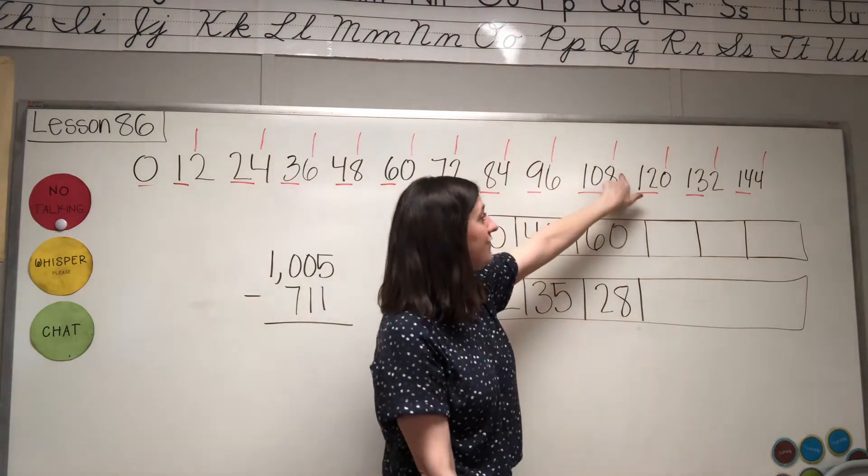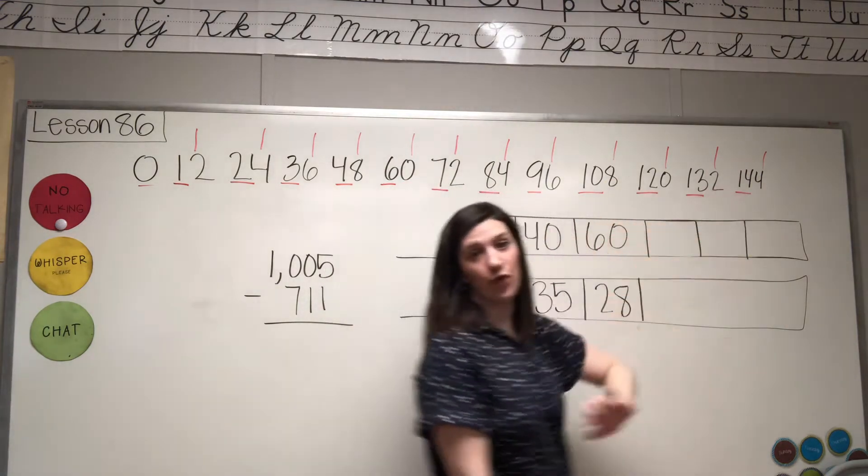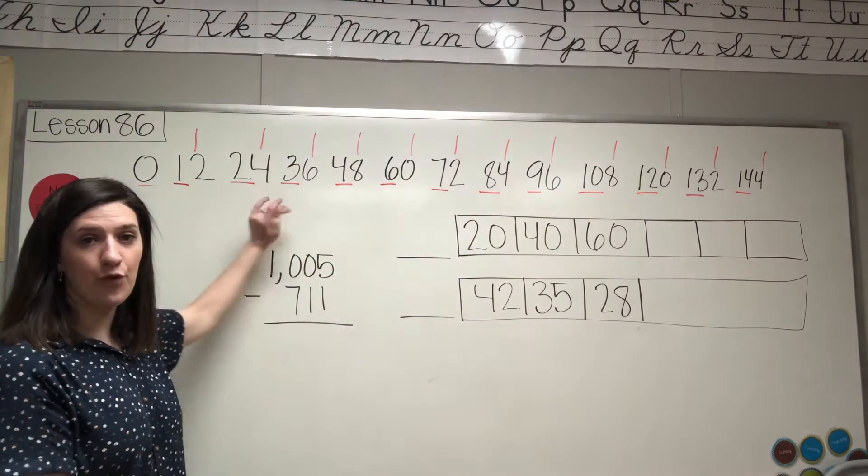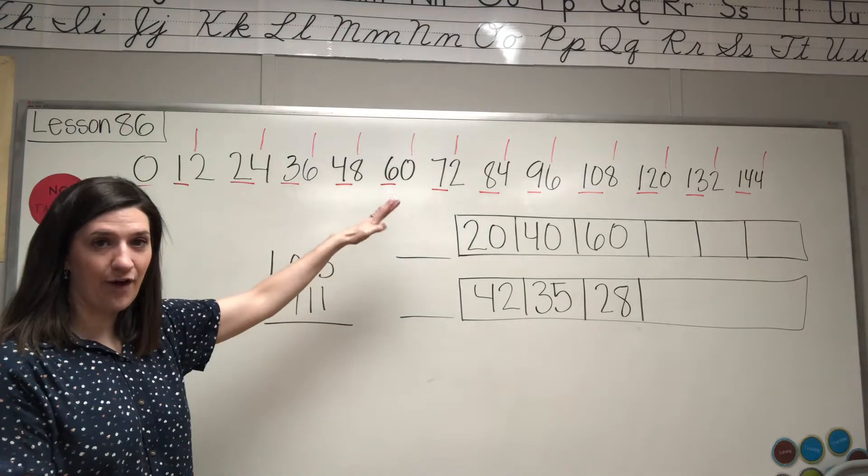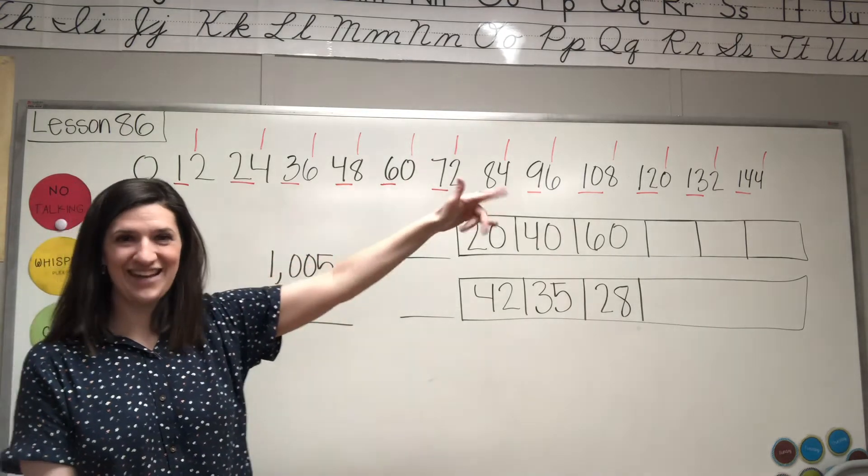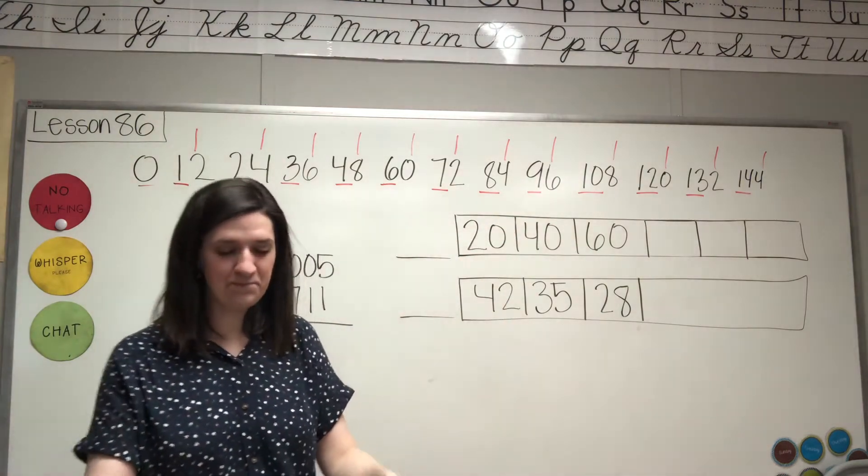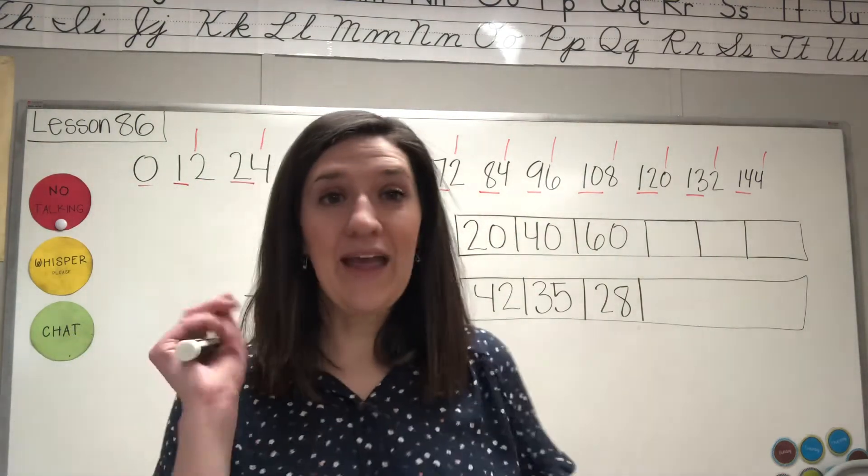Skip 11, 12, 13, 14. And then in the ones place you have your count by 2s: 0, 2, 4, 6, 8, 0, 2, 4, 6, 8, 0, 2, 4, and so on and so on.